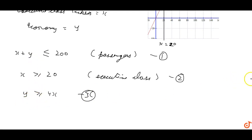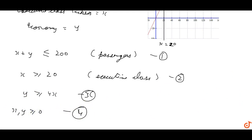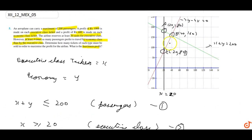Also, x and y should be greater than or equal to zero. Now we plot these on a graph. The equations to plot are: x plus y equals to 200, y minus 4x equals to 0, and x equals to 20.